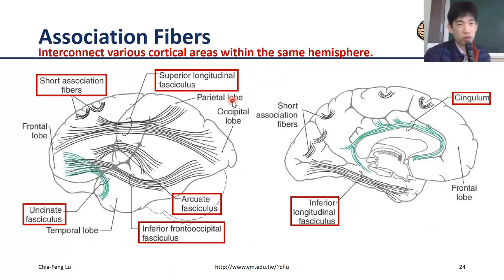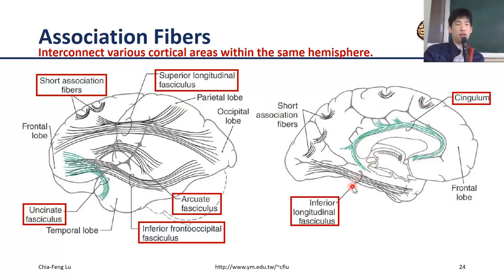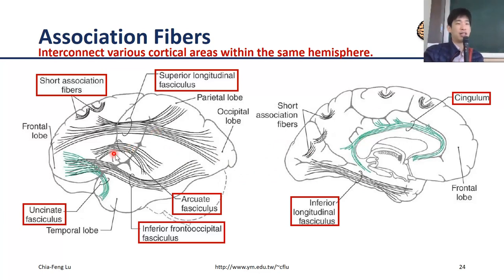Let's start with the association fibers. Remember that they interconnect various cortical areas within the same hemisphere. There are several different kinds of fibers, or fasciculi, located within the hemispheres. The main tracks shown here include the superior longitudinal fasciculus, which connects the frontal lobe to the parietal and occipital lobes. For the connection between occipital and frontal lobes, we have the inferior frontal occipital fasciculus.